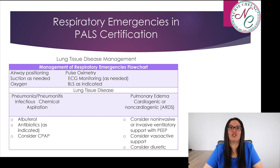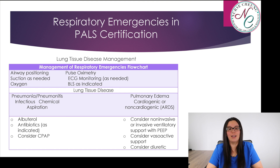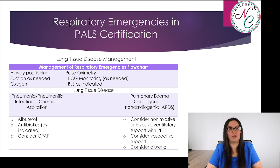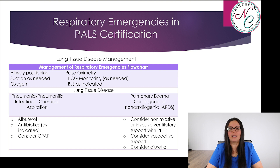The treatment of lung tissue disease is similar to other disorders but differs depending on what we're treating. For pneumonia and pneumonitis — whether infectious, chemical, or aspiration — treatment includes albuterol, antibiotics as needed, and we might consider CPAP. For pulmonary edema, whether cardiogenic or non-cardiogenic such as ARDS, we want to consider non-invasive or invasive ventilatory support with PEEP, vasoactive support, and possibly diuretics.